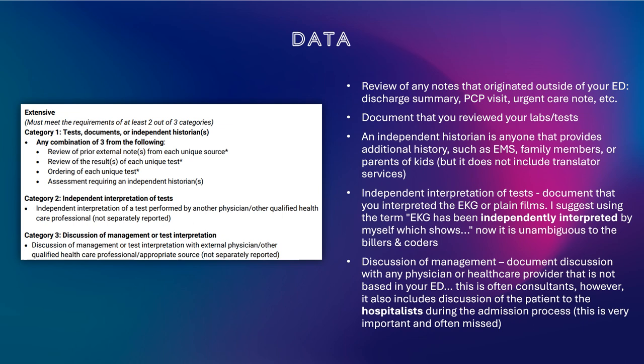Now we'll move on to the data column. This one involves three categories. First, you want to review any notes that originated outside of your emergency department. This could be a discharge summary, a primary care visit, or an urgent care note. However, it does not include previous emergency department visits to your ED — it has to be from outside of your ED.